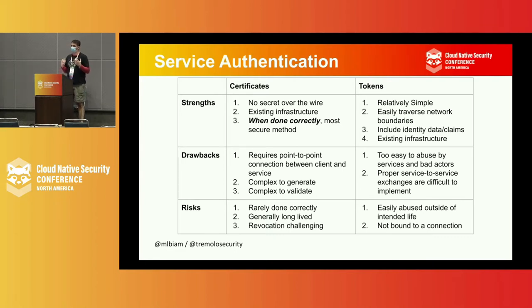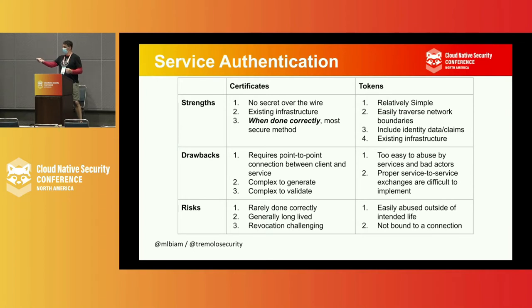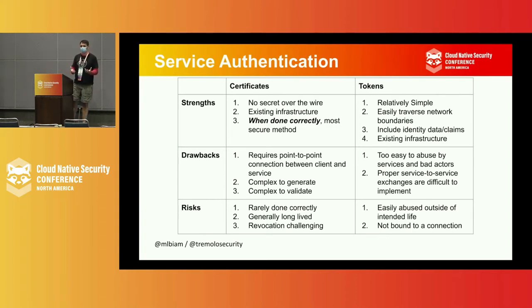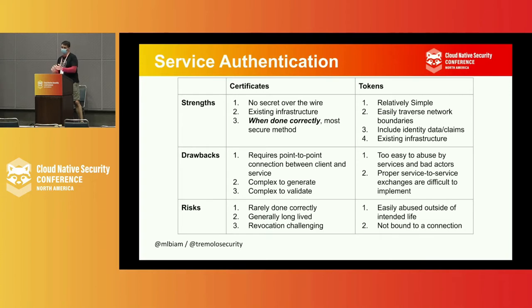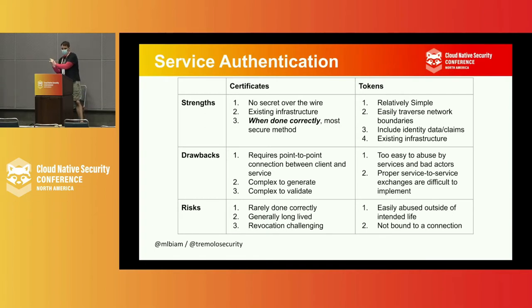With tokens, the big strength is its ability to move across networks easily. You're able to say, here's my token — doesn't matter how complex the network is. The other big thing that's great about tokens is that they can generally include identity claim information in them, such as user context information, group information, perhaps transactional information that can all be verified. So you don't have to go back to the source in order to get that data.